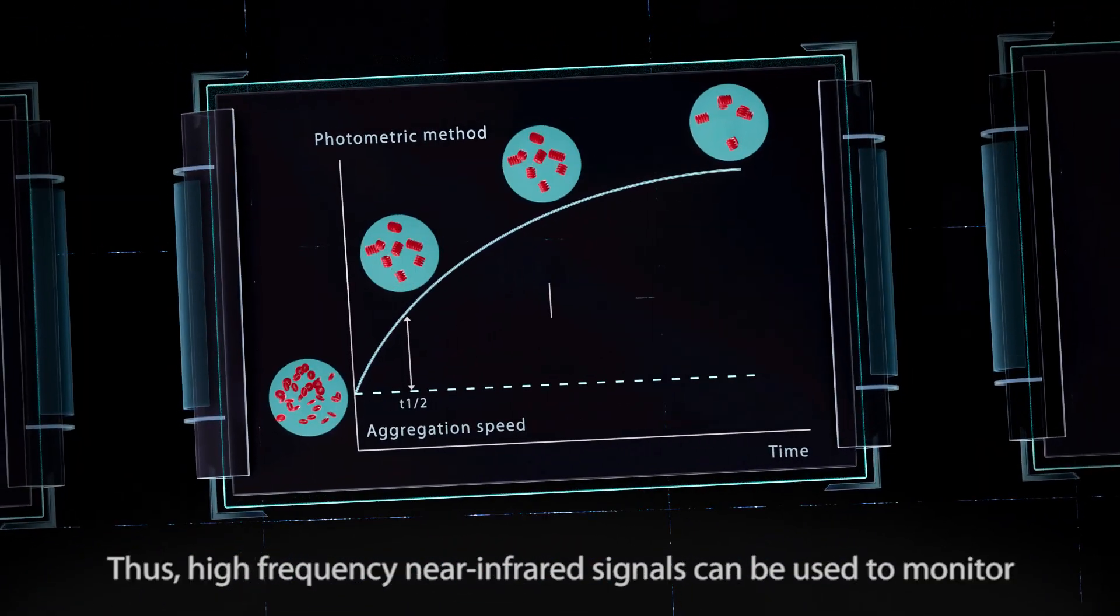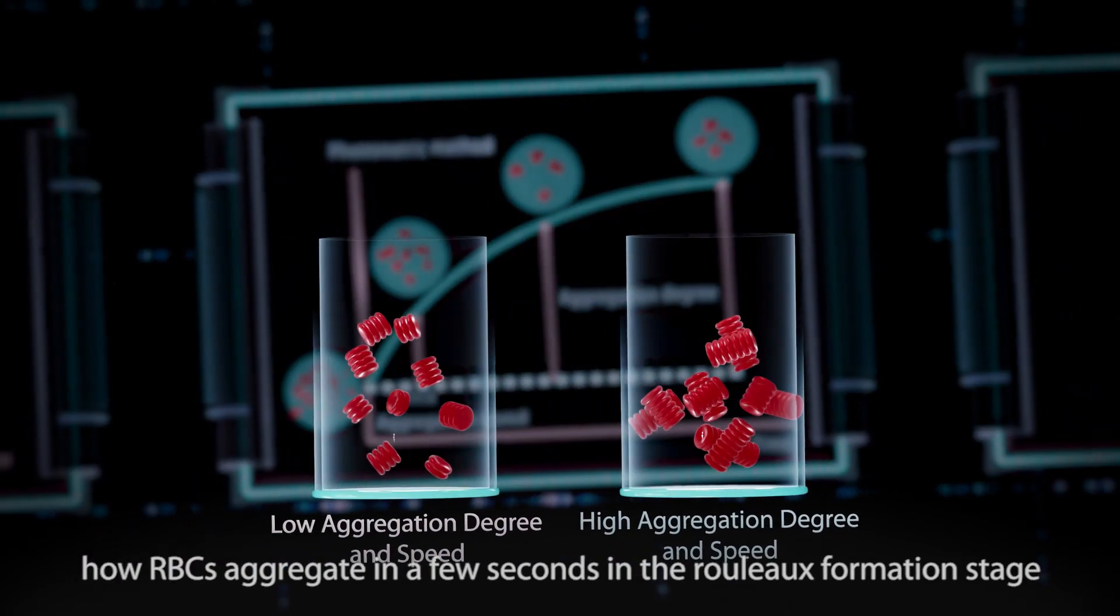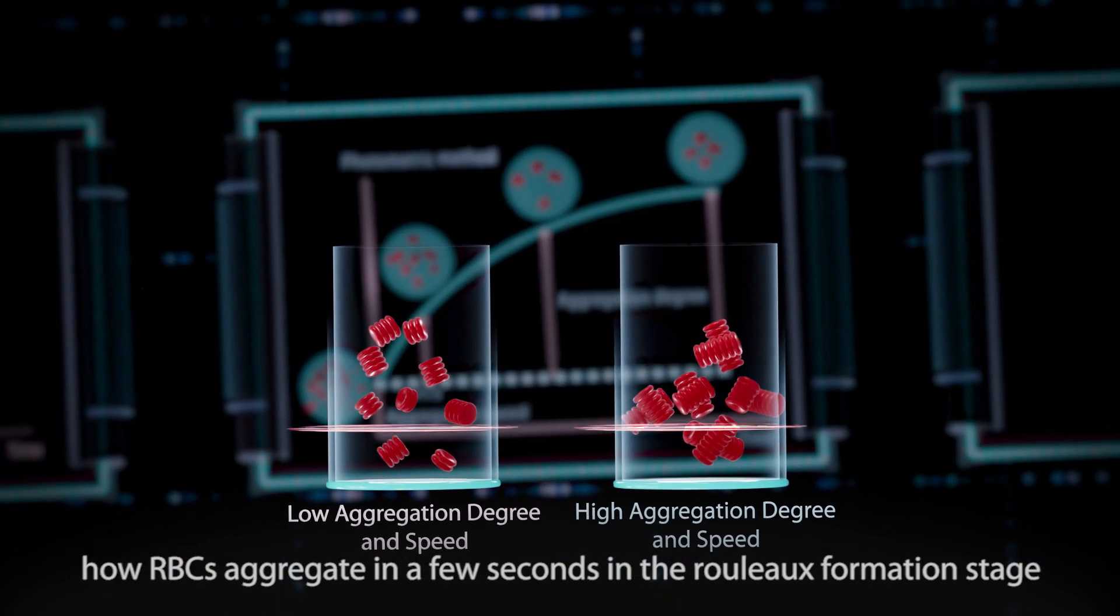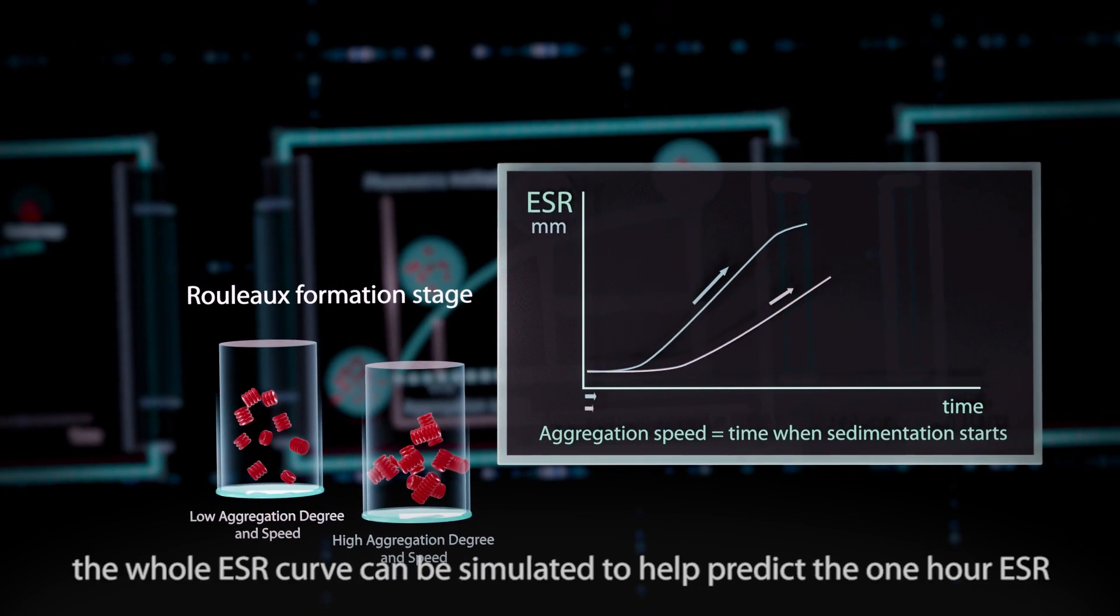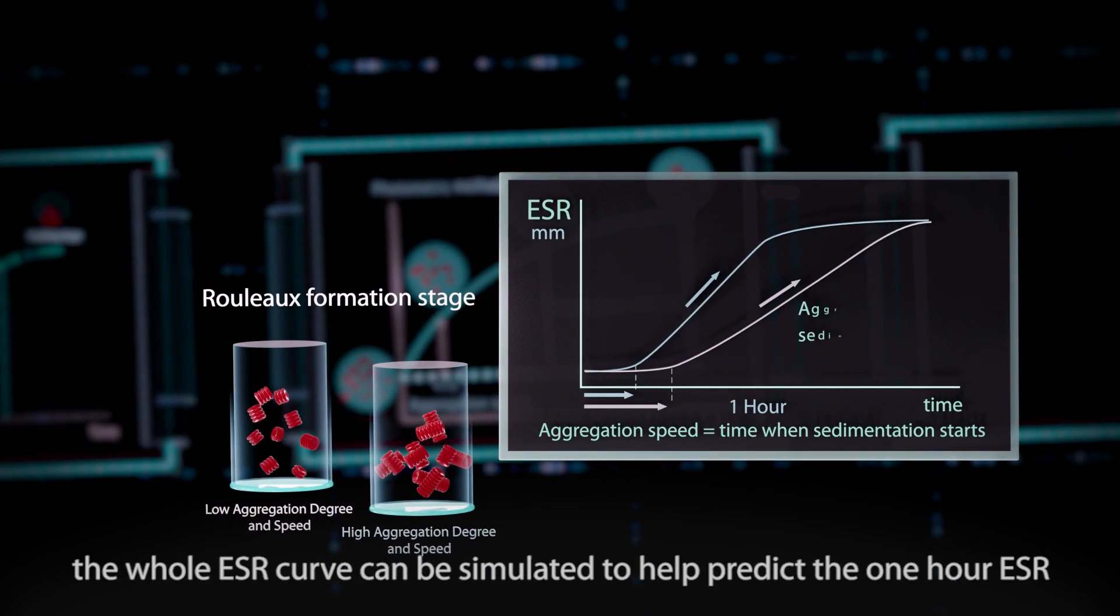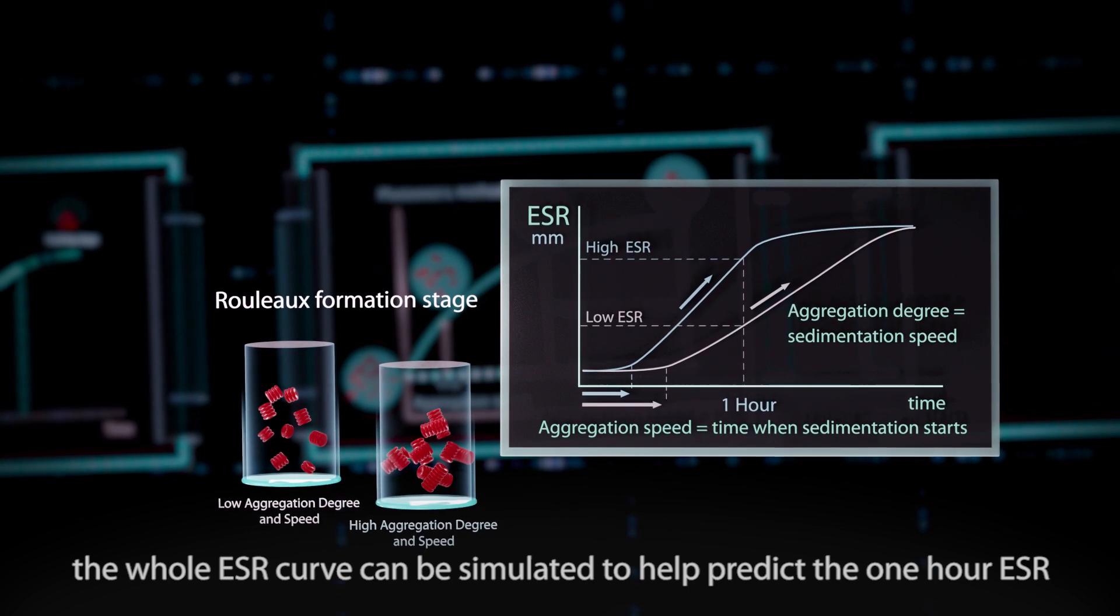Thus, high-frequency near-infrared signals can be used to monitor how RBCs aggregate in a few seconds in the Rolo formation stage. Based on the monitoring results, the whole ESR curve can be simulated to help predict the one-hour ESR.